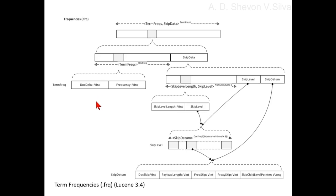For the second term, since the frequency is more than 1, we use a separate vint to store the frequency. Doc ID delta equals 4, binary is 00000100. Since we want to show the following vint stores the frequency and not another doc ID, we need to make the last bit 0, then shift left and add 1 for the real frequency of 3.